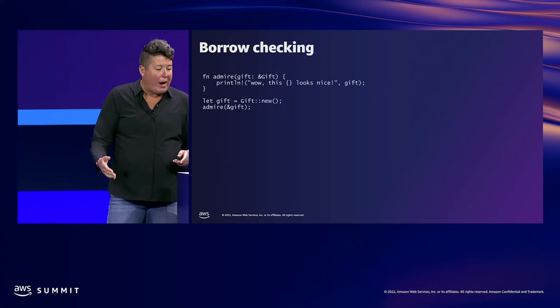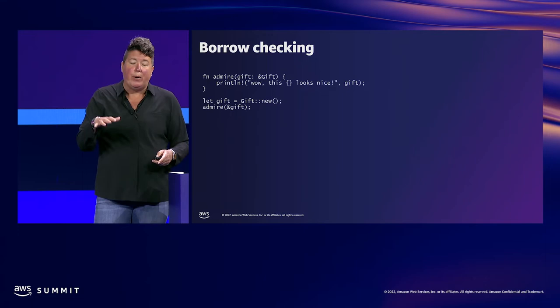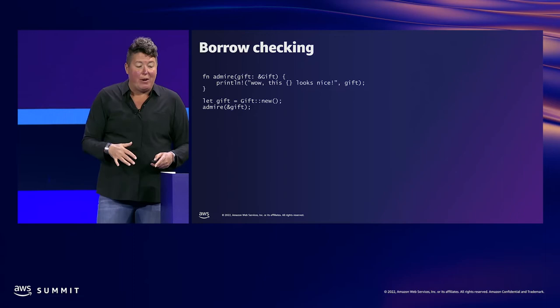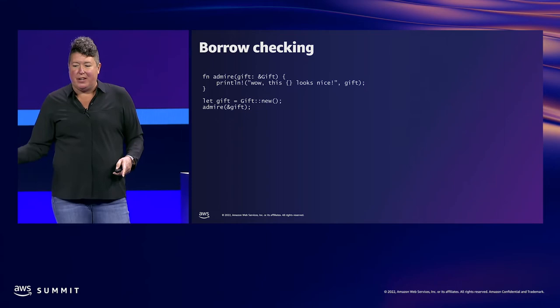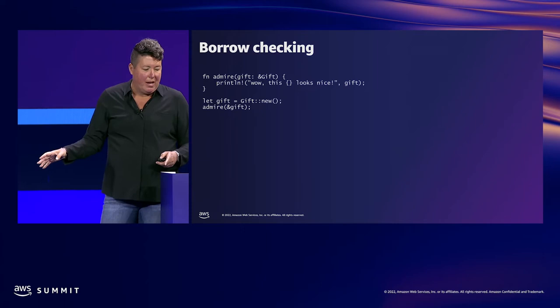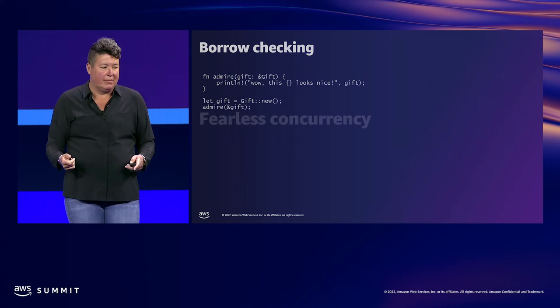In Rust, we solve the copy problem by letting you borrow data without taking ownership. The memory stays where it is, and a pointer is passed around — guaranteed to be valid by the compiler. If my friend wants to admire my gift, she can borrow it. While she's borrowing it, no one else can have it; I cannot pass ownership. The Rust compiler enforces these rules, and because they are enforced, the memory doesn't have to be copied. When you put it all together, you have a language that is both efficient and safe.